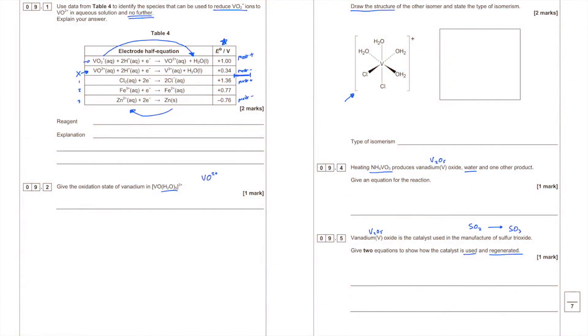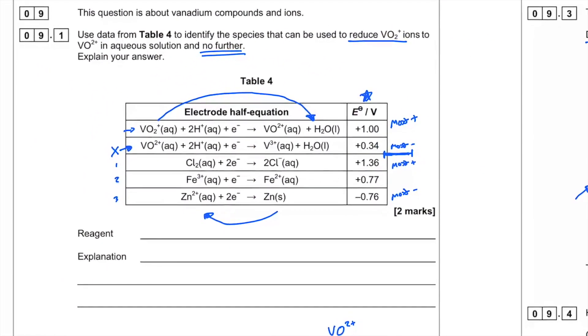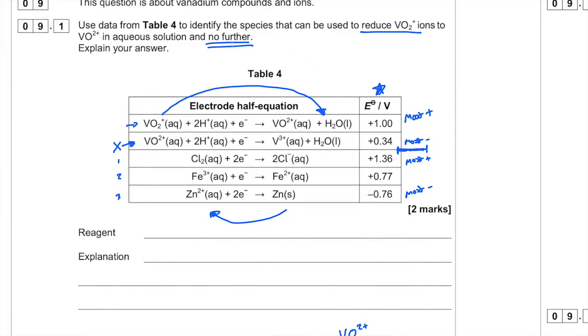Okay, so let's have a go with this question 9 here, blatantly about redox. This question is about vanadium compounds and ions. We need to use the data from Table 4 to identify the species that can be used to reduce VO2+ ions to VO2+ ions in aqueous solution and no further. We need to explain our answer.